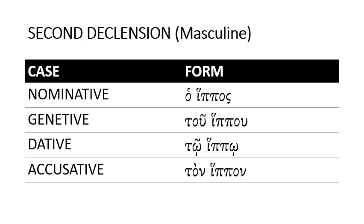The second pattern, when it's the masculine, is this one. The nominative case is 'o ipos'. Genitive case is 'tu ipu'. Dative case is 'to ipo'. Accusative case is 'ton ipon'.